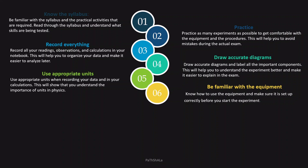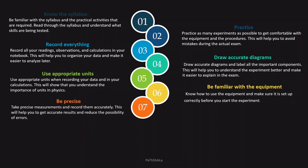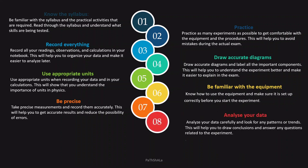Point number seven is to be precise — take precise measurements and record them accurately. This will help you to get accurate results and reduce the possibility of errors. Point number eight is to analyze your data carefully and look for any patterns or trends. This will help you to draw conclusions and answer any questions related to the experiment.